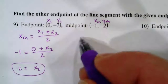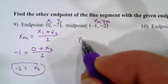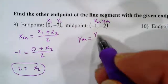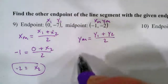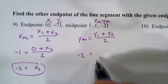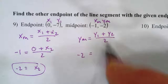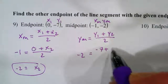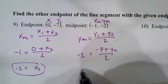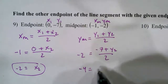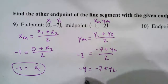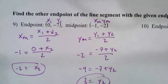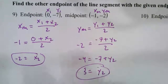And then we've got y sub m equals y₁ plus y₂ over 2. We can substitute negative 2, and then substitute negative 7 plus y₂ over 2. Multiply both sides by 2: negative 4 equals negative 7 plus y₂. Add 7 to both sides, and we get 3 equals y₂. So our new pair of coordinates would be negative 2, 3.